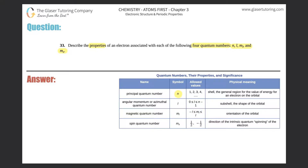We start from the largest and work down to the smallest — so n, then l, then ml, and finally ms. Starting with n: n is the principal quantum number. It tells you the overall shell number, which in turn tells you the general amount of energy in that shell.